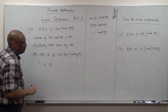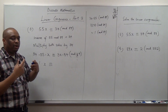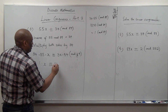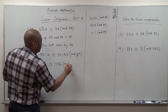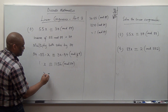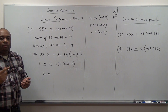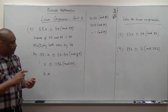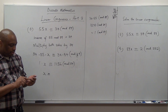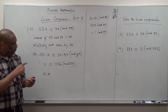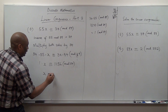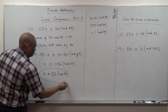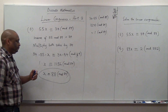So x is equivalent to 34 times 34 mod 89. 34 times 34 gives us 1156 mod 89. We now simplify: 1156 divided by 89 gives integer part 12, and 12 times 89 is 1068. Then 1156 minus 1068 gives 88. So x is equivalent to 88 mod 89, and that becomes your answer: x = 88.